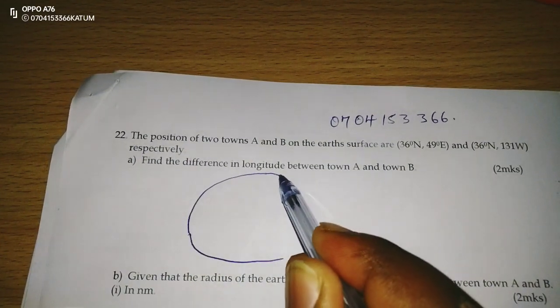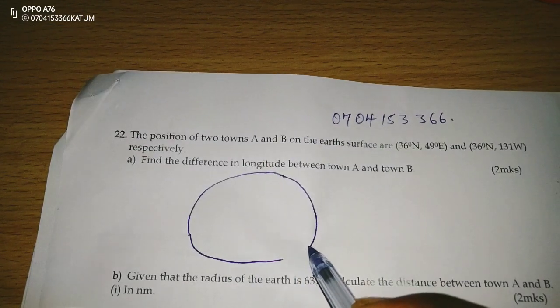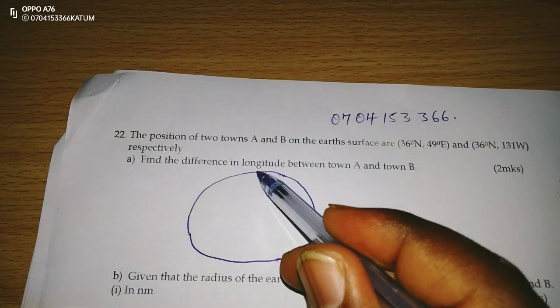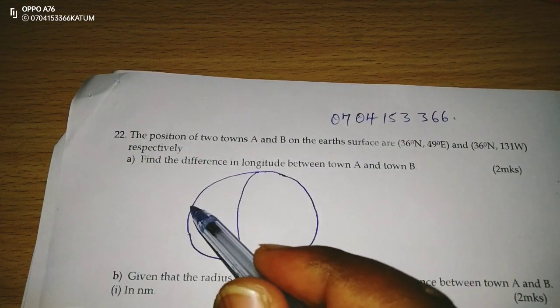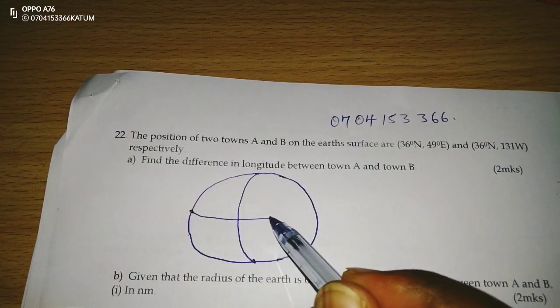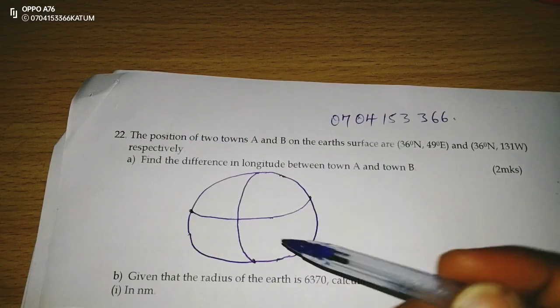If this is the globe of the earth, then we will have 0 degrees prime meridian and 0 degrees equator.